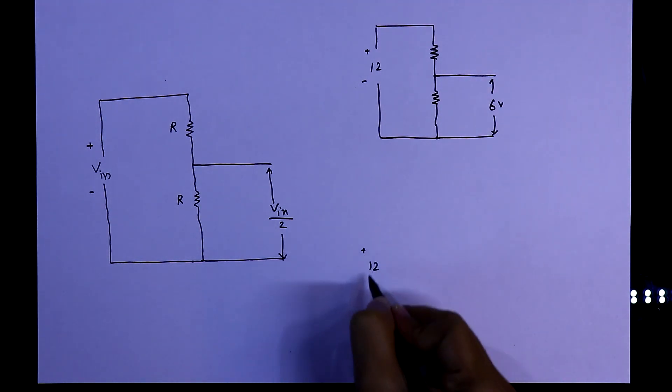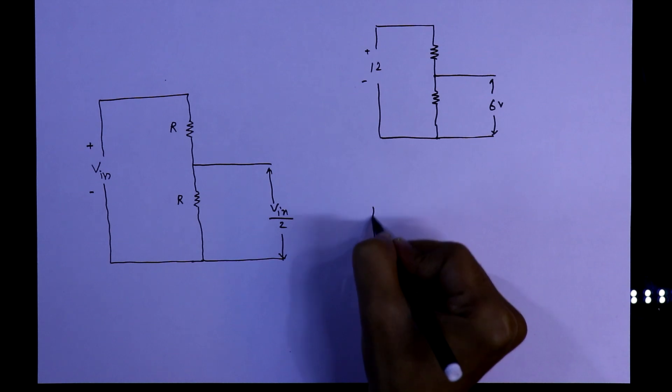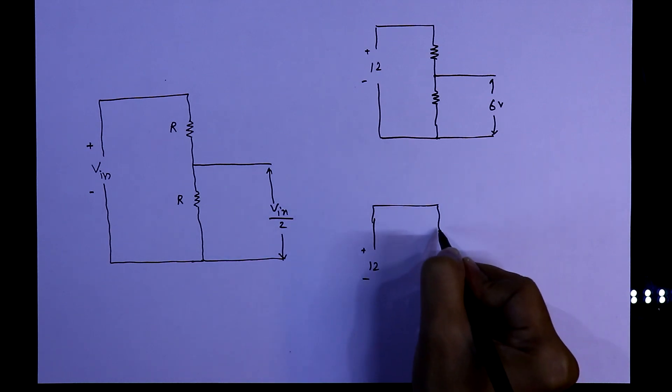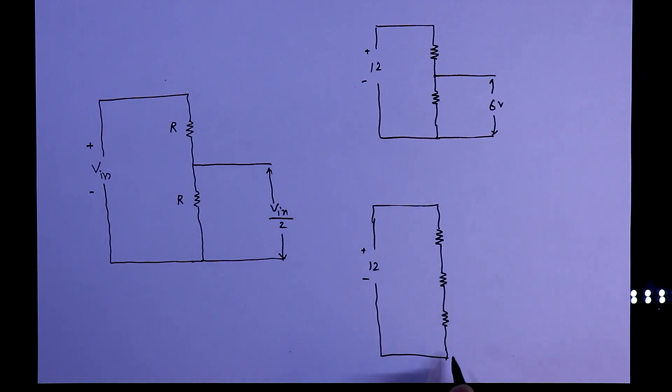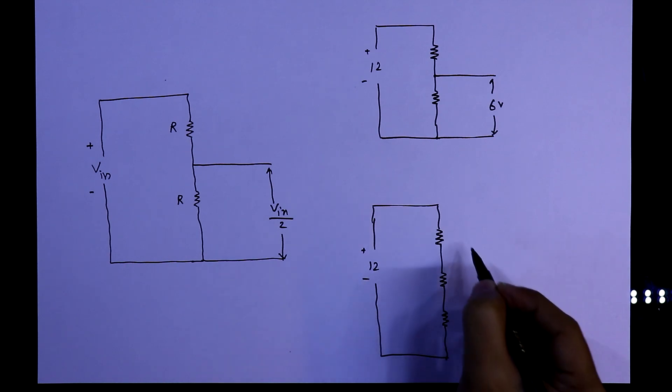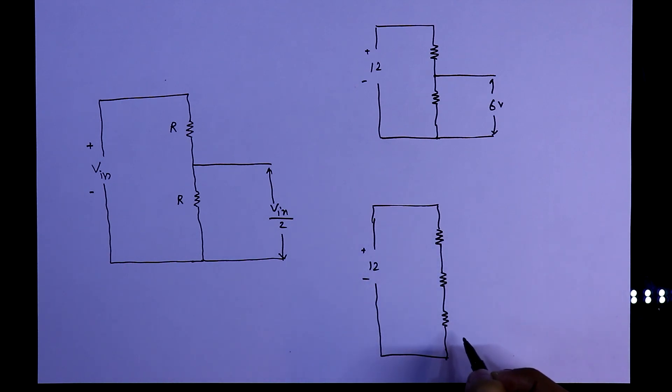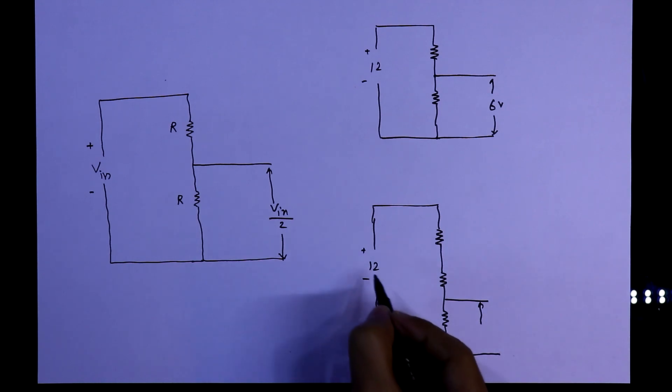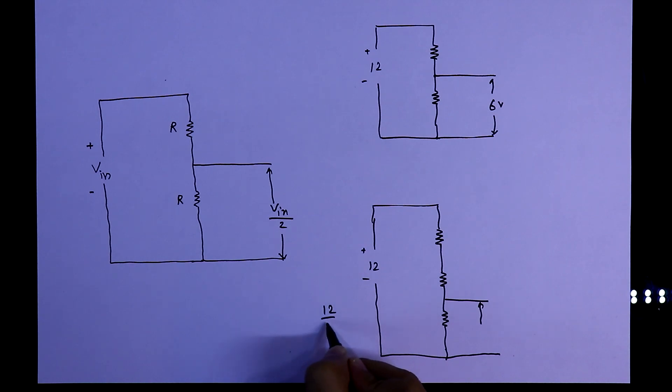Again if we take 12 volt and we have connected three resistors, now this 12 volt is dividing in three parts. From the ground side up to this, the voltage will be 12 divided by 3, it is equal to 4. So here we will get 4 volt.